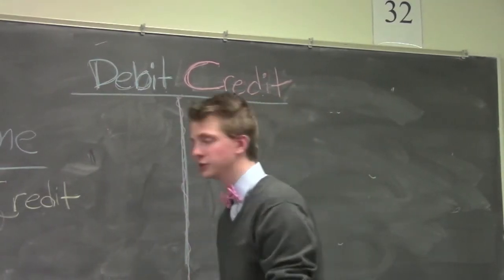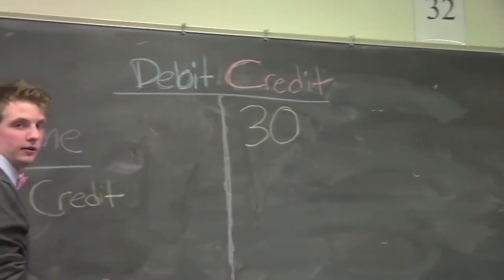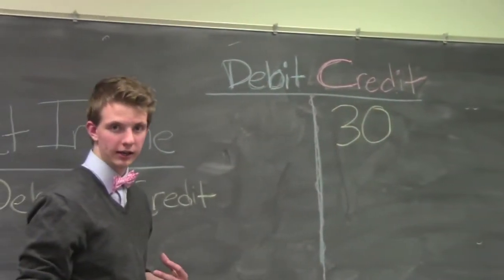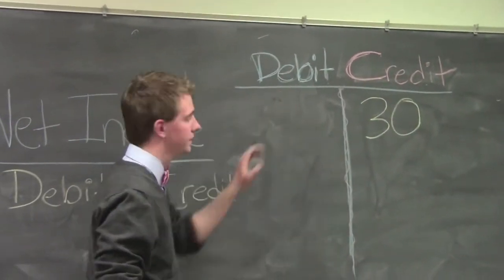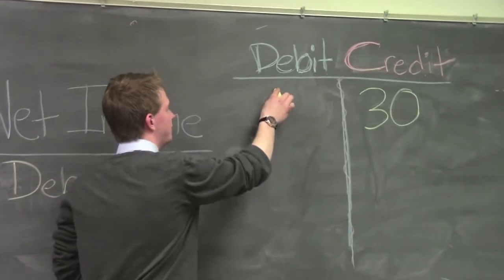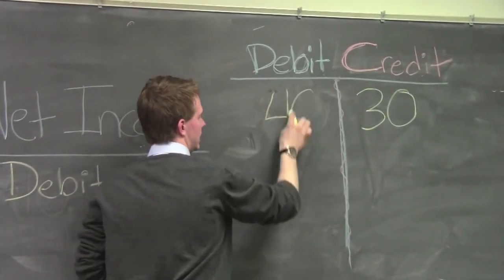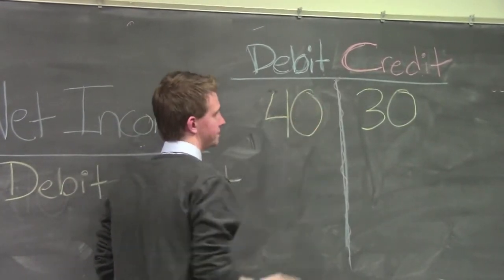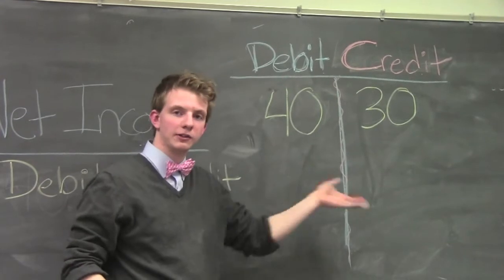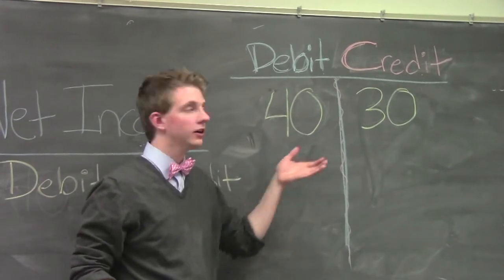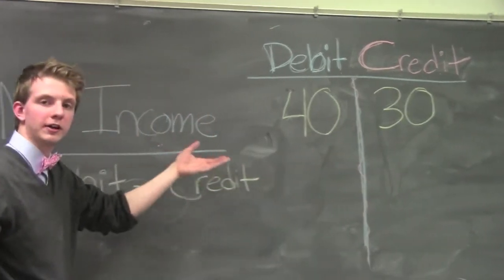However, when we sold the purse to our customer, we made money — money coming in — so we made debits. We have forty dollars in debits. Now that we have these two things in our t-chart, we can calculate net income.